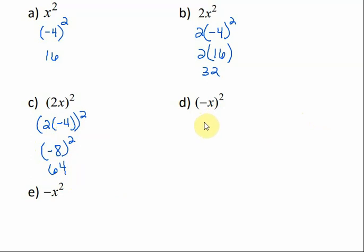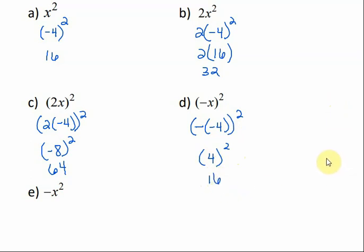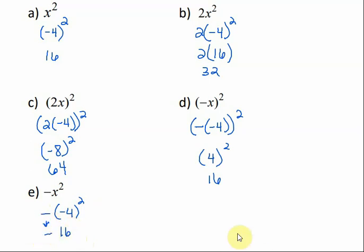For d, we have negative x squared, and x is negative 4 — all of that is in parentheses. We do what's in parentheses first: negative negative 4 would be 4, and 4 squared is 16. For e, the negative is not in parentheses, so we don't multiply first. We do the exponent first — just bring down the negative, then square the negative 4. Negative 4 squared is positive 16, and with the negative brought down, the answer is negative 16.